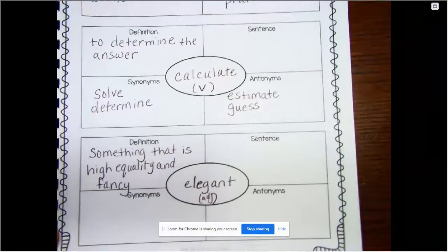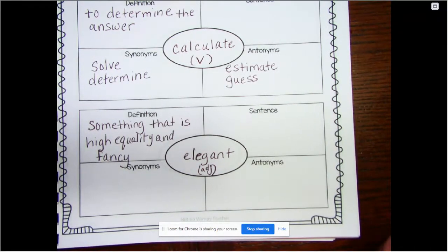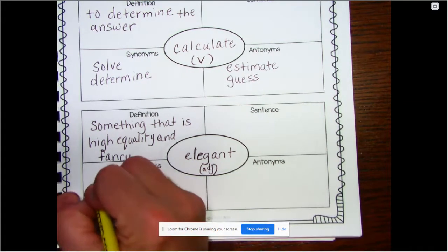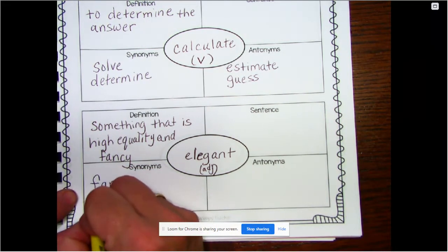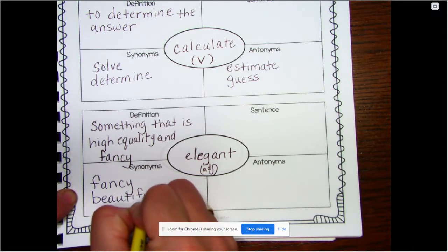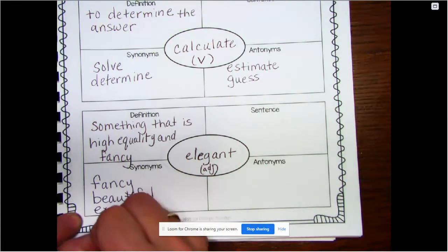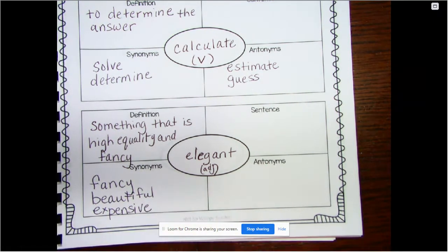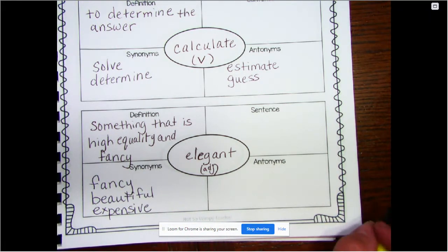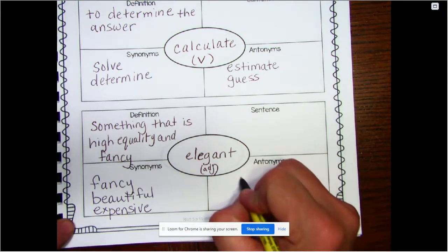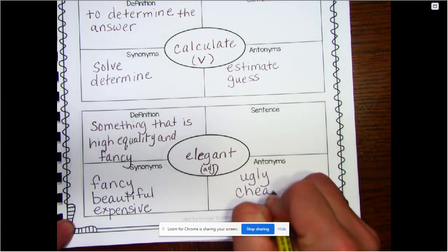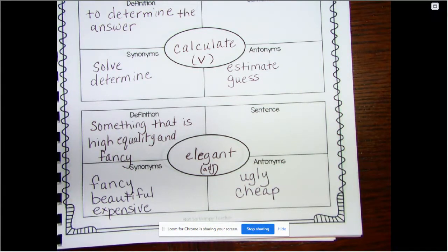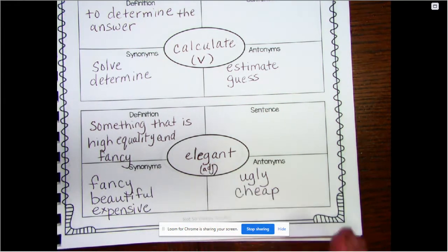All right, so go ahead and pause that if you have to still finish. And when you're done, come back. We're going to go to the word elegant. Something that is high quality and fancy is elegant. A word that is similar is fancy, beautiful, sometimes expensive. Okay, the opposite of being fancy, beautiful, expensive, or elegant would be to be ugly, which we don't normally talk like that, do we? Ugly or cheap. All right, so if you're elegant, you'll look fancy and beautiful and expensive, and if you're the opposite of elegant, it might look ugly or cheap.